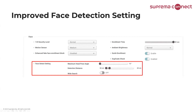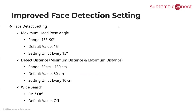In BioStar 2, click on the device to see the face detection setting menu. The maximum head pose angle can be set — this refers to how much the head is tilting. The range is 15 to 90 degrees, with a default of 15 degrees, adjustable in 15-degree increments. Detect distance is the distance between the device and the person standing in front for authentication. The range is 30 cm to 130 cm, with a default of 30 cm, adjustable in 10 cm increments. Wide search on/off has a default value of off — when enabled, it searches the entire screen area rather than sensing just the one person directly in front.